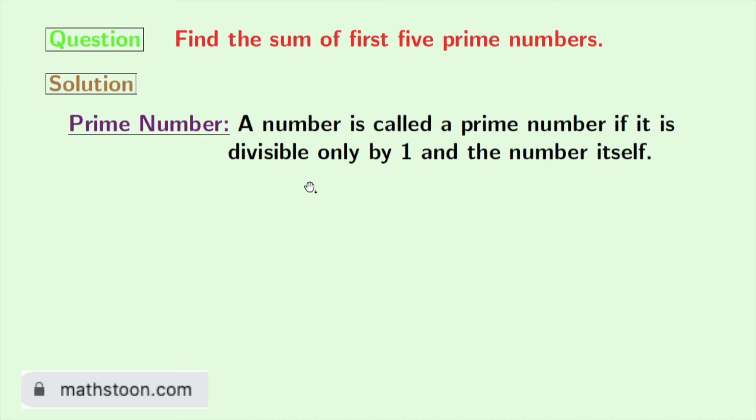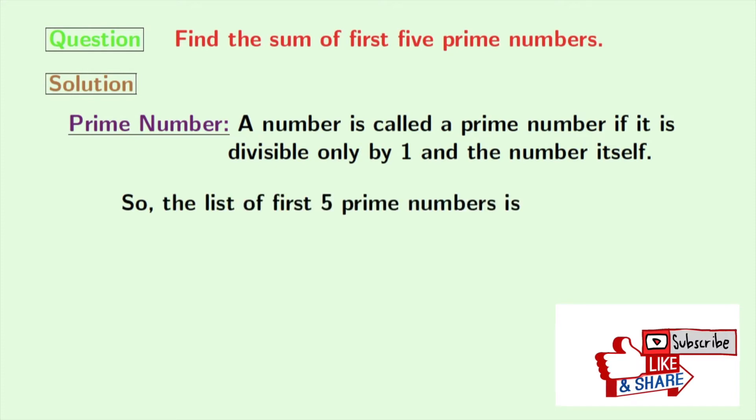So according to this definition, the first five prime numbers are 2, 3, 5, 7, and 11.